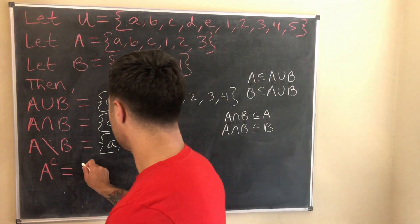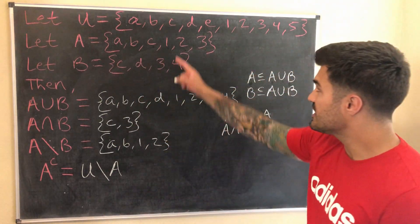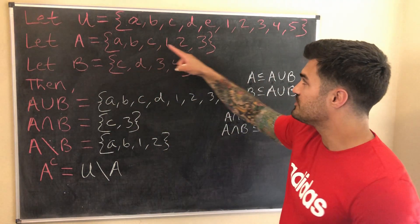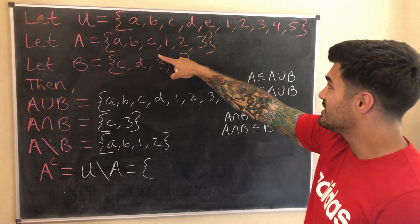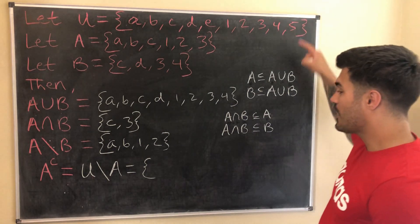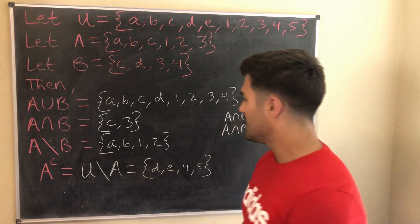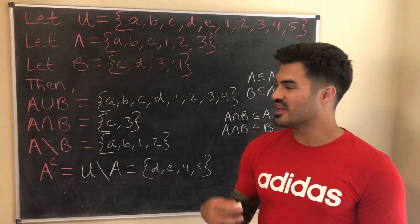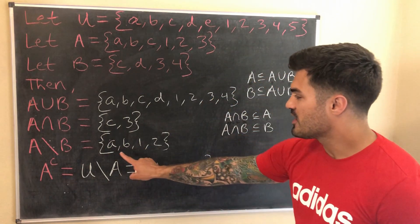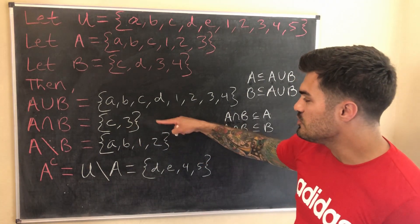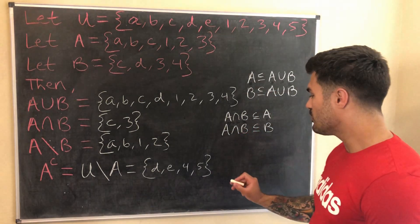A minus B includes elements in A that are not in B: a and b are included, c is excluded; 1 and 2 are included, 3 is excluded. So A minus B = {a, b, 1, 2}. For the complement of A, we take the universal set and remove all elements of A, leaving: {d, e, 4, 5}. Interestingly, A intersect B = {c, 3} and A minus B = {a, b, 1, 2}, and their union gives back exactly A.